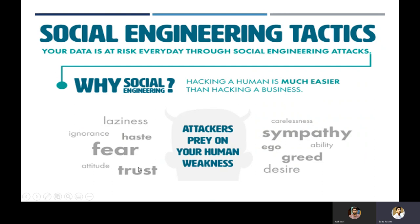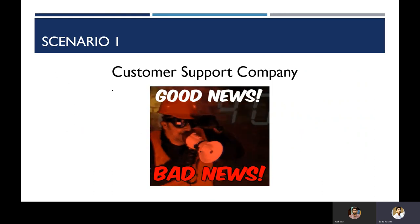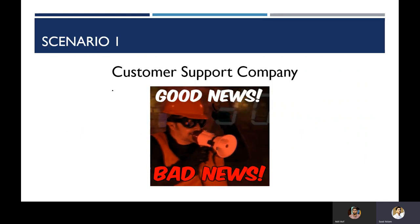Why does social engineering work? It works because of laziness, ignorance, hate, fear, attitude, and trust — these are the things that count in social engineering and why people fall into these attacks. Attackers prey on your human weaknesses: carelessness, empathy, ego, and greed are features that cyber attackers exploit when they attack you. Let's discuss a scenario on social engineering.